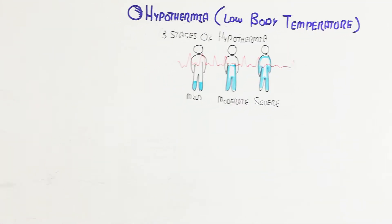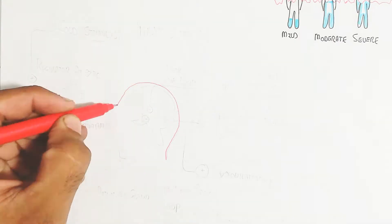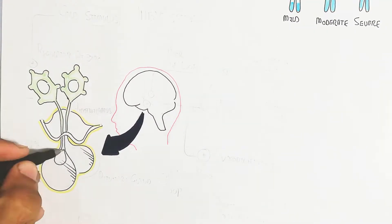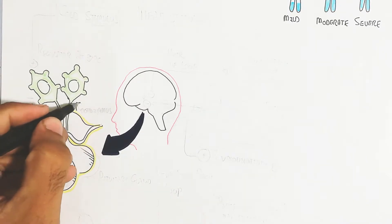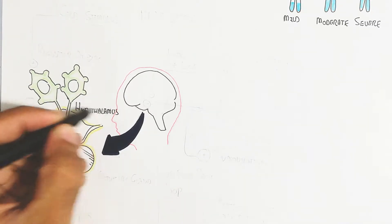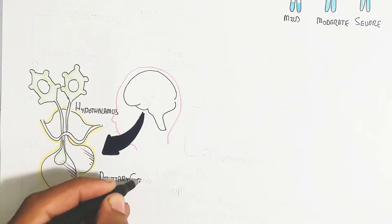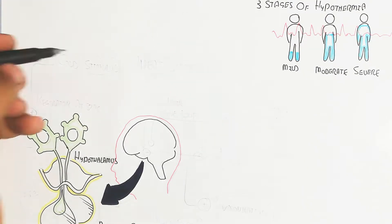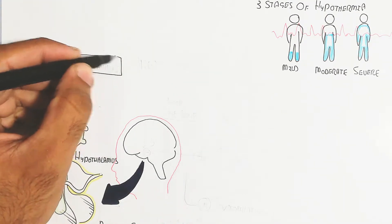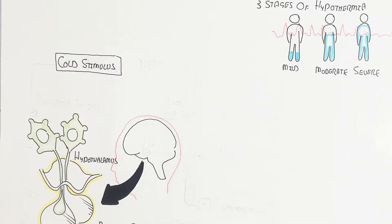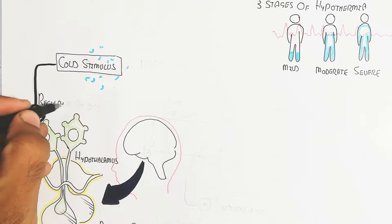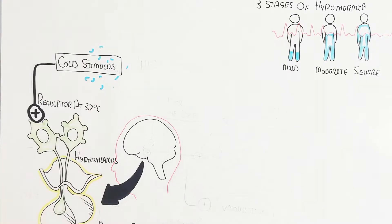The hypothalamus and the pituitary gland produce thyroid-stimulating hormone, which stimulates the thyroid gland to produce energy and heat for thermoregulation. When we are exposed to a cold environment, the cold stimulus triggers the hypothalamus. When body temperature drops to 36 degrees Celsius, the hypothalamus — which regulates temperature at 37 degrees Celsius — responds.